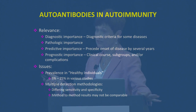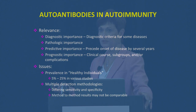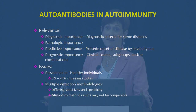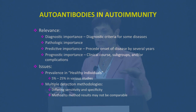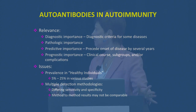But there are issues with these autoantibodies. They can be present in healthy individuals. In some studies, as many as 25% of healthy people can have an autoantibody, especially an ANA. And there are multiple detection methodologies with differing sensitivities and specificities, and method-to-method results may not be comparable.